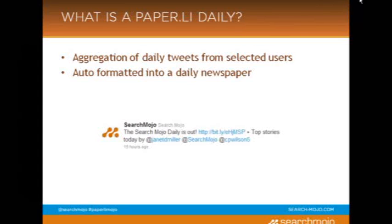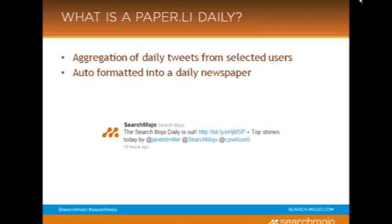Paper.li is a way to aggregate daily news and blog posts. And if you only have about 15 minutes to spend on Twitter on a daily basis, this service is really great for you. You can choose not to auto-tweet the Paper.li daily. I'm sure some of you have seen an example of what is on the screen right now — the Search Mojo daily is out, with top stories by Janet D. Miller, Search Mojo, and C.P. Wilson. Those are the auto-tweets that you can choose to have Paper.li send out on a daily basis to let your following know that new content is ready.